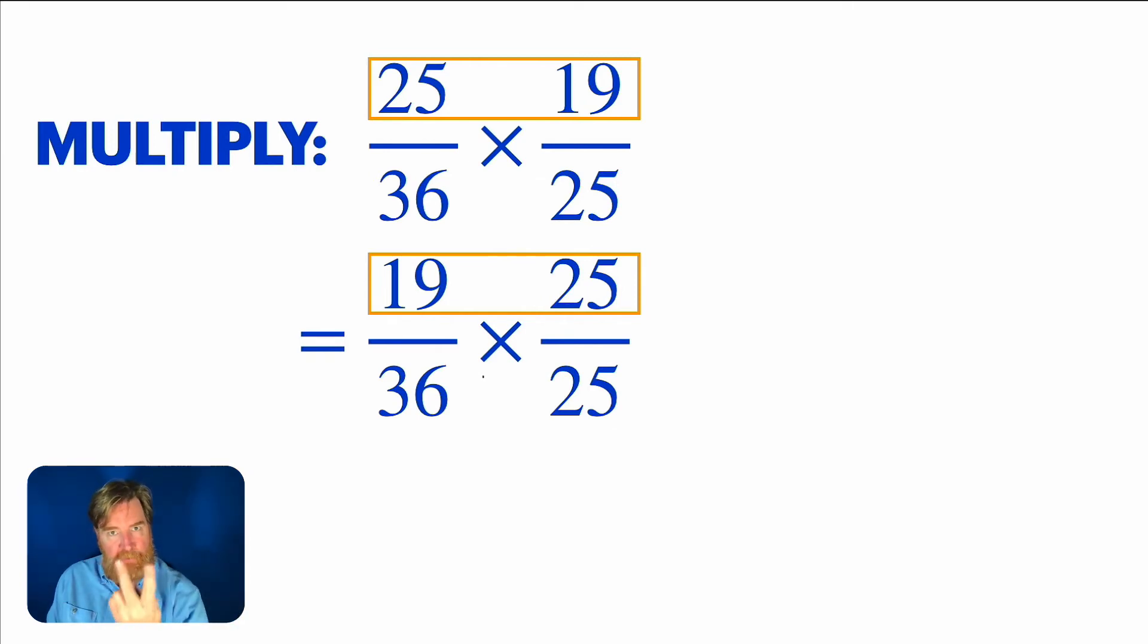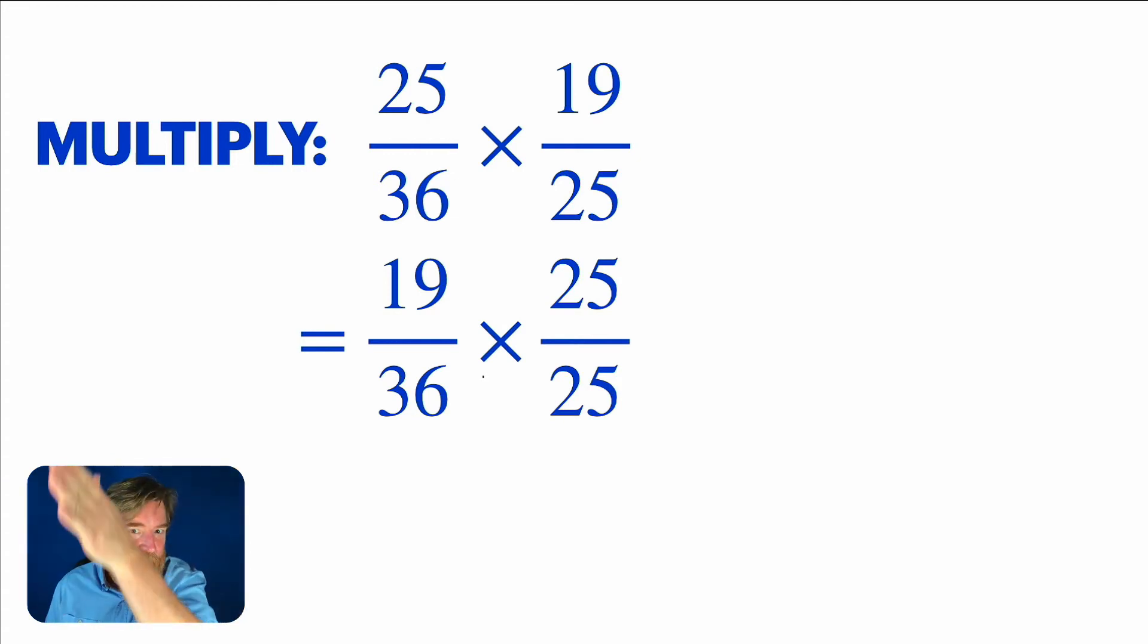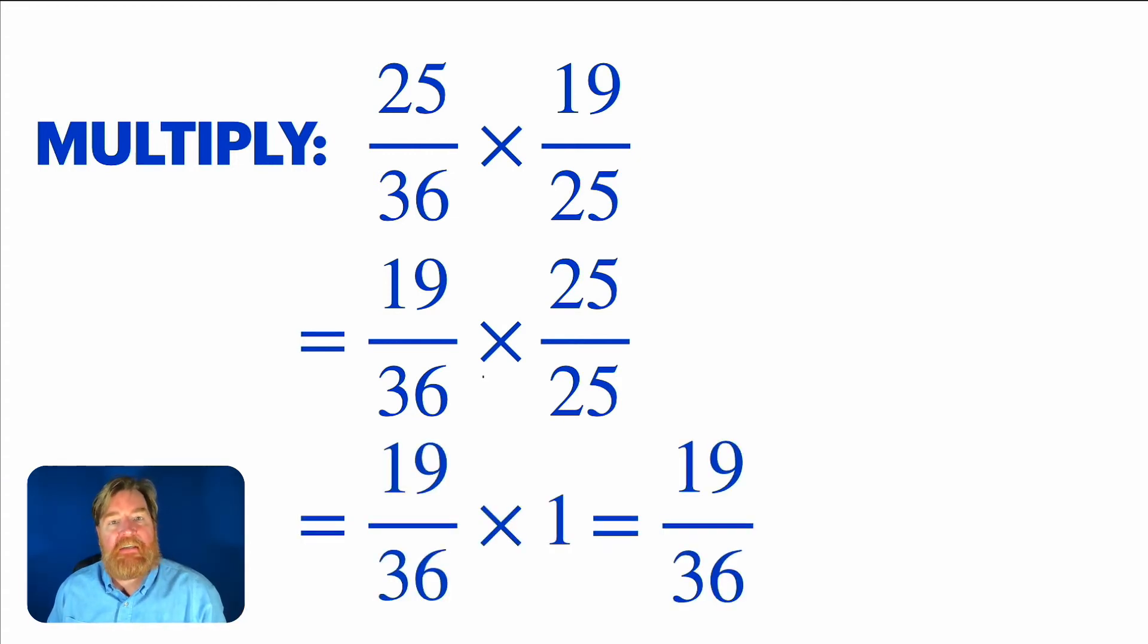By the way, you can do the bottoms. You can commute the bottoms. You can commute the tops. But you can't do like a top to a bottom because that's not how we're multiplying. We multiply tops and bottoms. Those are the things we can switch. But look, once we do that, see that twenty-five twenty-fifths? You know that's just one. So nineteen thirty-six times one is just nineteen thirty-six. It's great, isn't it?